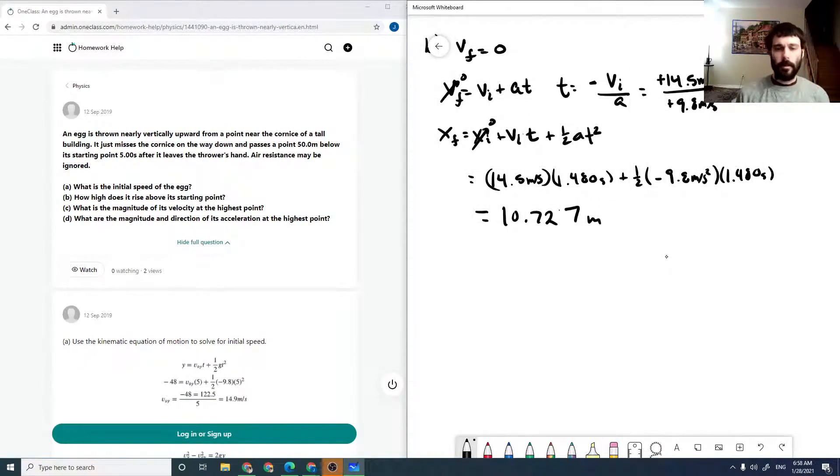So the next couple questions are kind of funny. Its magnitude of its velocity at the highest point. Well, we assumed it was 0 to solve it, and it would be because that's its turning point. So v is 0.